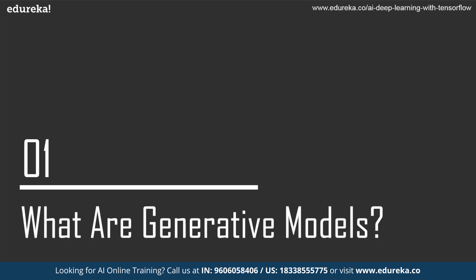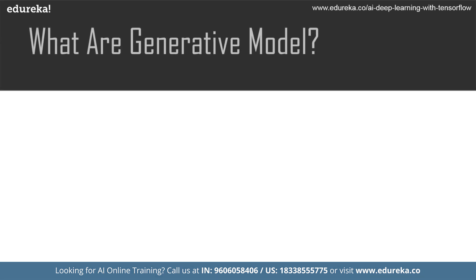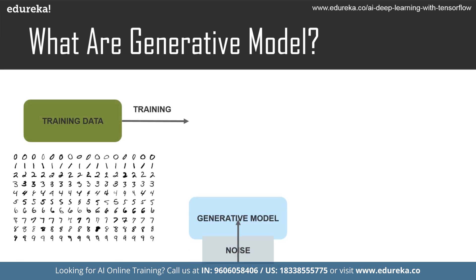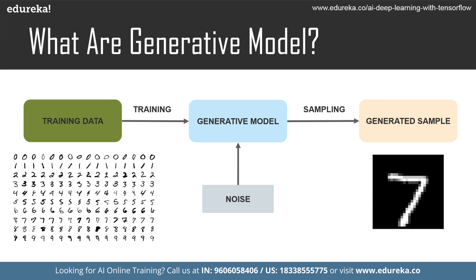Let us understand what GANs are by starting with generative models. Generative models use an unsupervised learning approach. In a generative model, there are samples in the data that are input variables X, but it lacks the output variable Y. We use only the input variables to train the generative model, and it recognizes patterns from those inputs to generate an unknown output based on the training data.